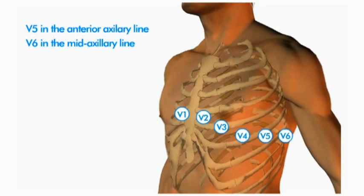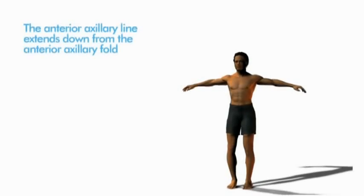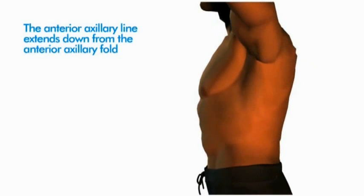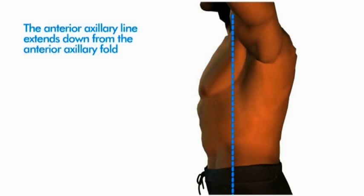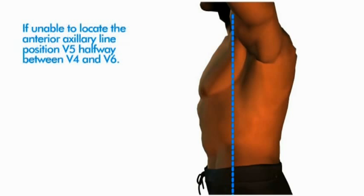While the mid-axillary line is reasonably easy to find, the anterior axillary line may be more subjective. The anterior axillary line extends down from the anterior axillary fold, which is formed by the border of the pectoralis muscle and the deltoid muscle — or where the arm joins the chest. Despite your best efforts, if you are unable to locate the anterior axillary line, position V5 approximately halfway between V4 and V6.